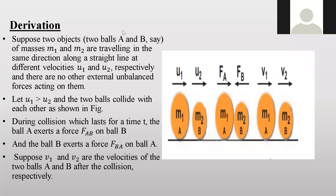For the derivation, suppose two objects A and B have masses m1 and m2. They travel in the same direction along a straight line with initial velocities u1 and u2 respectively — u1 for A and u2 for B — with no other force acting on them. Since u1 is greater than u2, A is going to collide with B. When they collide, they apply forces on each other.